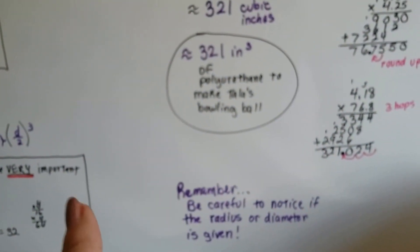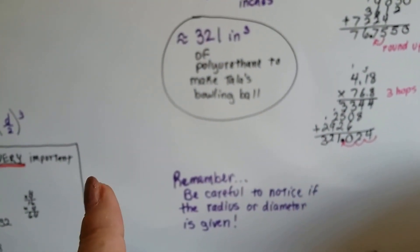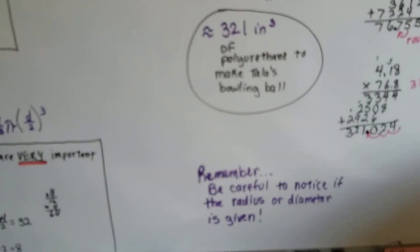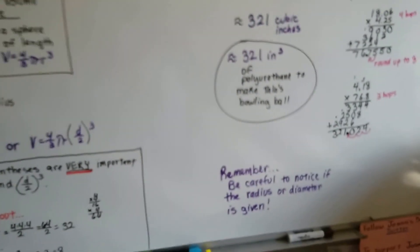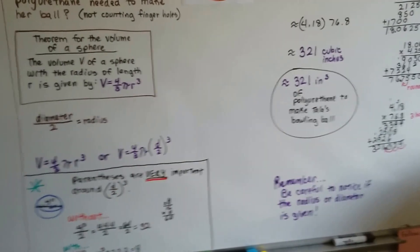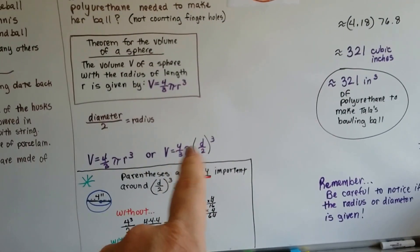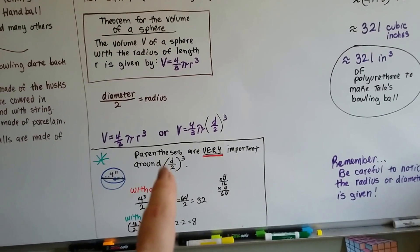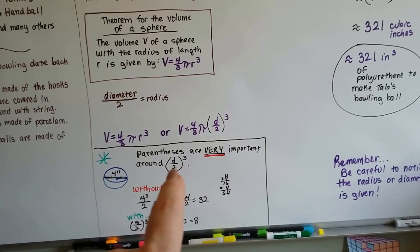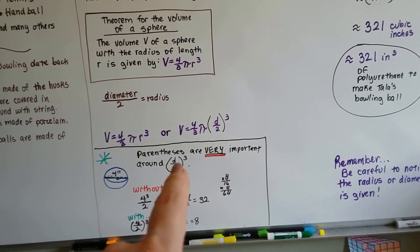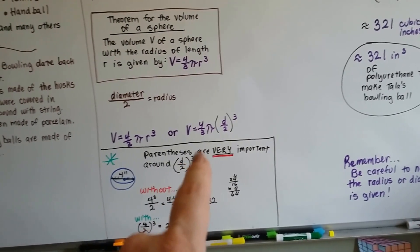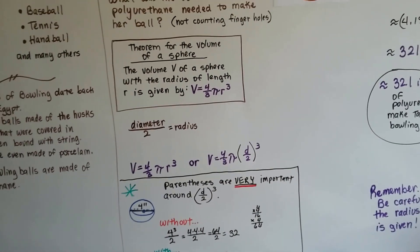Just remember to be careful to notice if it's given the radius or the diameter because it's very important that you don't mix them up. You want to make sure you're multiplying the correct numbers. Do you need to divide the diameter in half? And remember to do the order of operations and put that fraction inside of parentheses with the cube symbol on the outside.